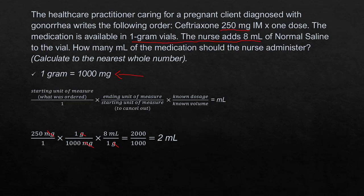So we can go ahead and solve. 250 times 1 times 8 is 2000. 1 times 1000 times 1 is 1000. 2000 divided by 1000 is 2. Our answer is 2 milliliters. Let's go on to our next question.